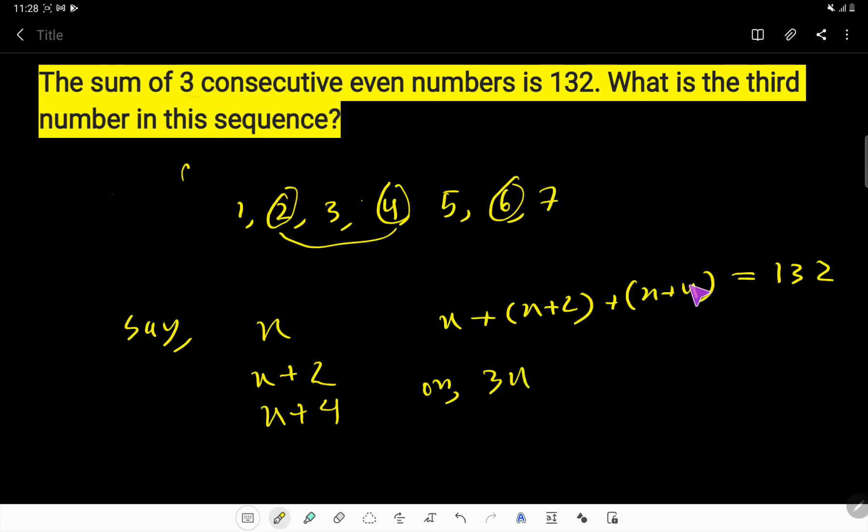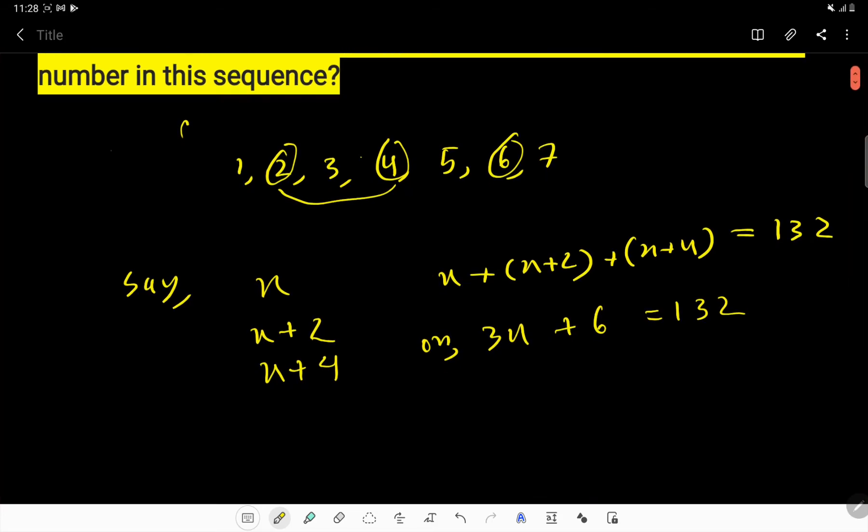So x, x, x, that is 3x, then 2 plus 4, 6 equal to 132.